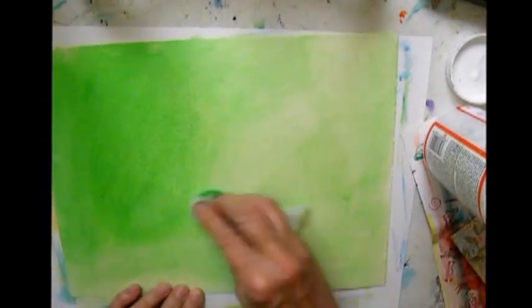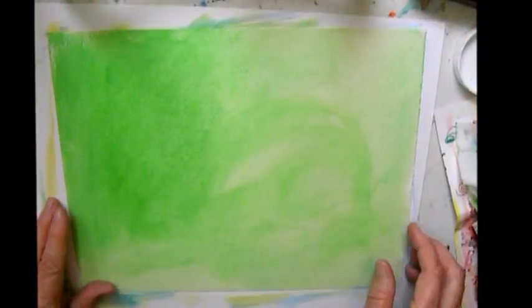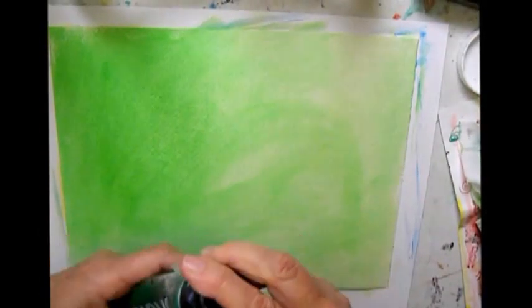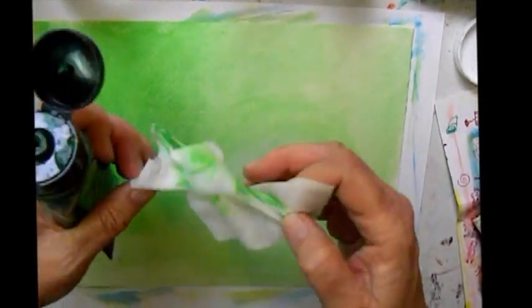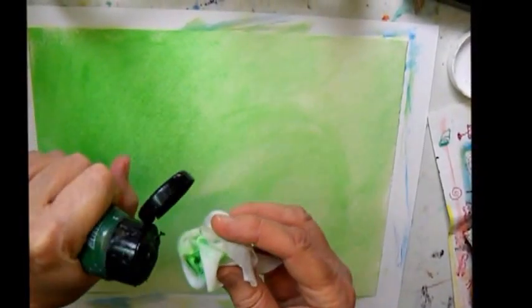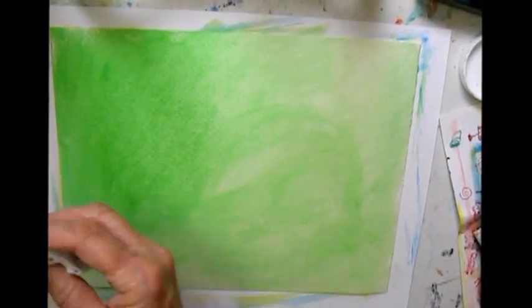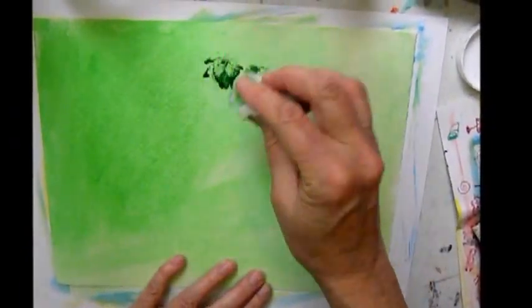And I decided to just dilute that really well to get a lighter green. I use a baby wipe for all of this spreading the paint because it's so easy to spread it evenly the way you like it. And then I'm using the same baby wipe rolled up in a kind of messy pattern.